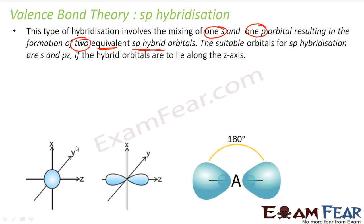1s and 1p, they are mixing to form 2 orbitals. This is 1 sp hybrid and this is 1 sp hybrid orbital. And these sp orbitals have 50% s-character and 50% p-character.